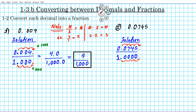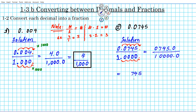We also move the denominator's decimal four places to the right. The numerator becomes 0745.0, which we write as 745, dropping the leading zero. The denominator becomes 10000. So our final answer is 745 over 10,000.